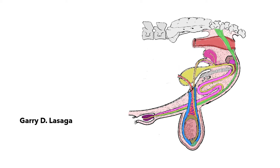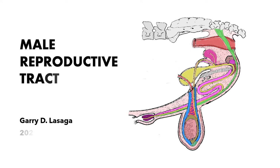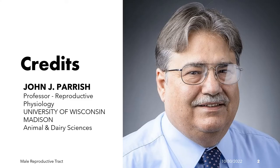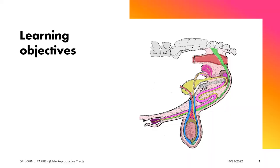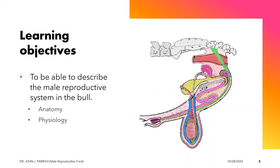Welcome to our lecture on the male reproductive tract, and in this presentation we're going to focus on the bull. This presentation was adapted with permission from the lecture of Dr. John J. Parrish, a professor of reproductive physiology at the University of Wisconsin, Madison. At the end of this lecture, students would be able to describe the male reproductive tract system in the bull in terms of its anatomy and physiology.